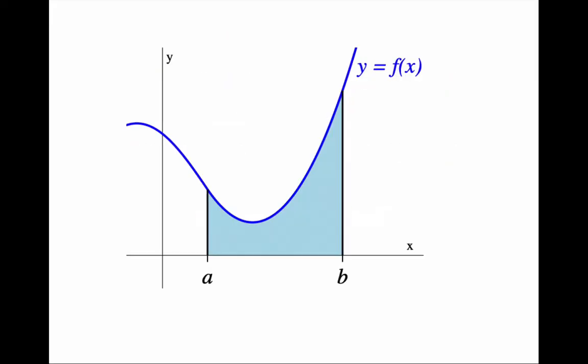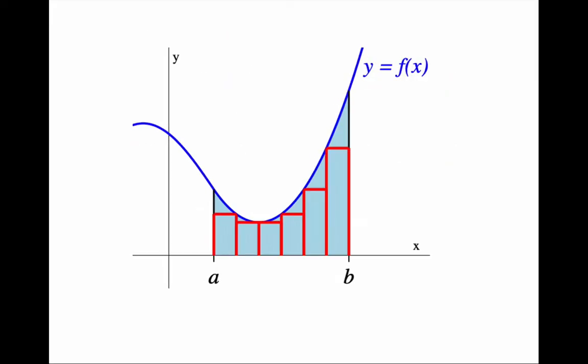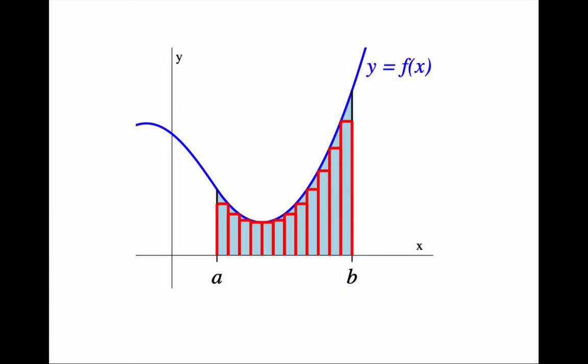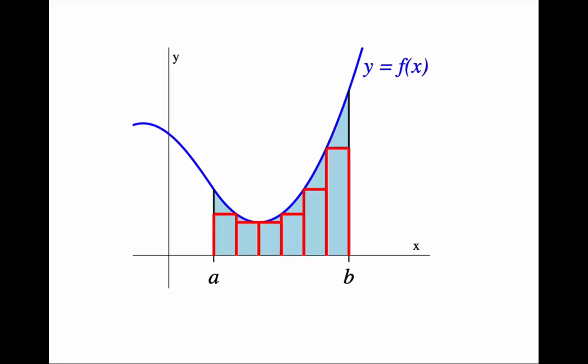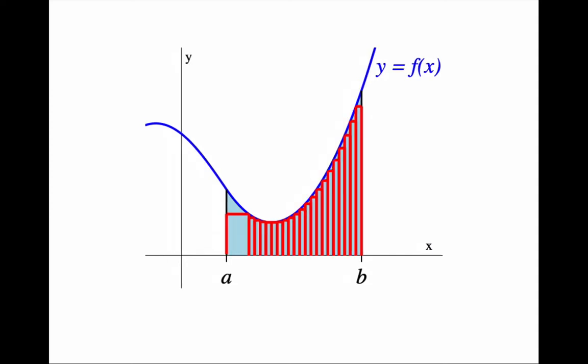We may naively think that we want to take the limit as the number of points in the partition approaches infinity. And hence, the number of rectangles in the upper or lower sum approaches infinity. But it is not that simple. We also need the width of every rectangle to approach 0, otherwise we may end up with something like this picture.